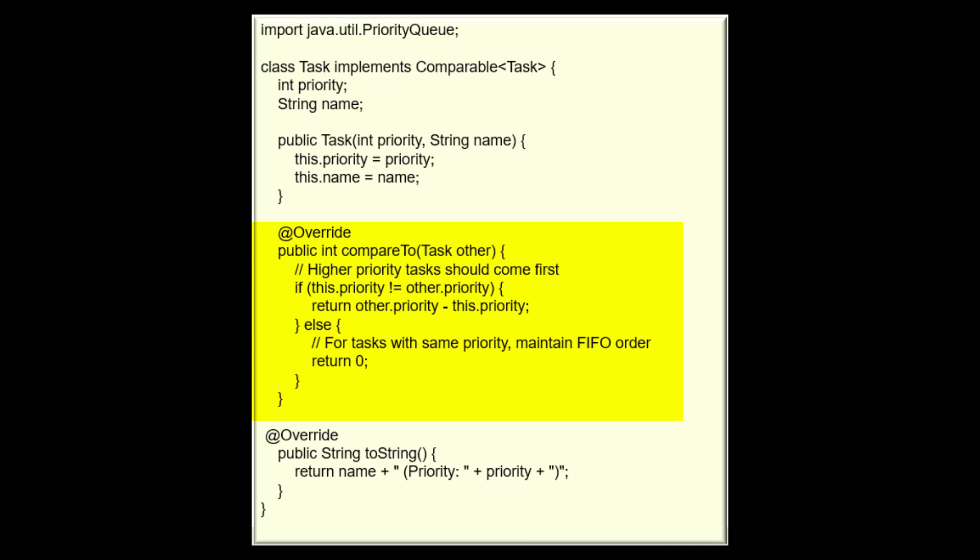The public int compareTo(Task other) method is from the Comparable interface, and it compares the current task object (this) with another task object called other. It returns an integer value that indicates the relationship or the relative ordering of the two objects.